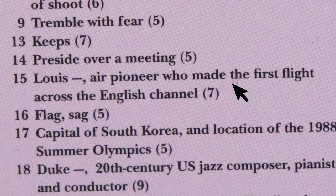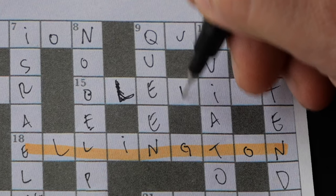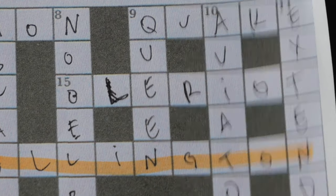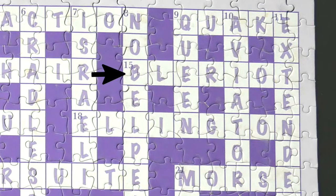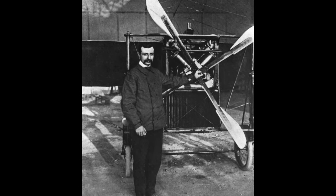Next on this list is number 15 across, Louis Bleriot. And it turns out that he was a French aviator. And there are even Bleriot airplanes that were made in France. So yeah, by the looks of it he was a really important person in the aviation world.